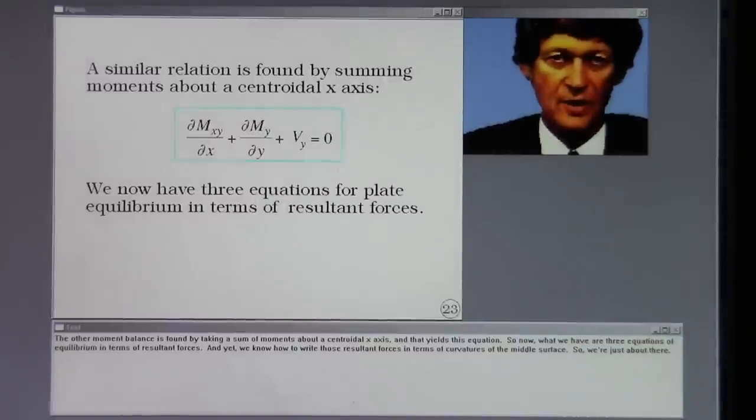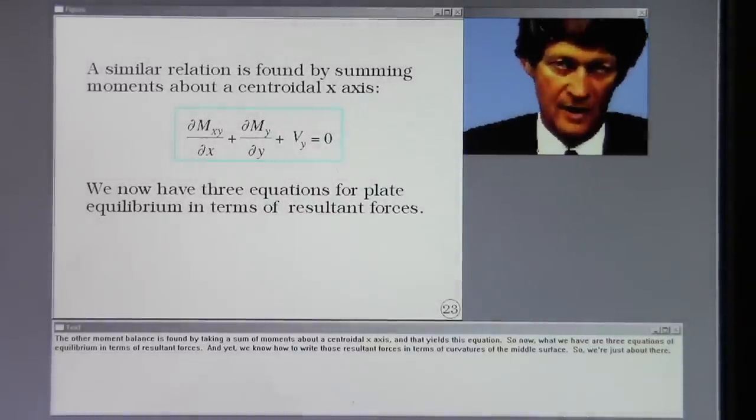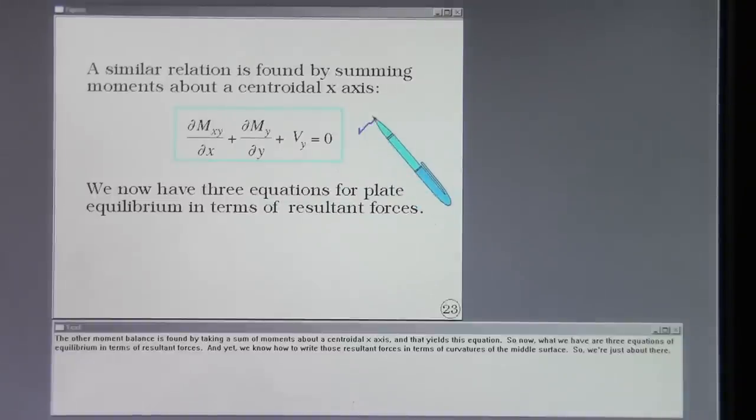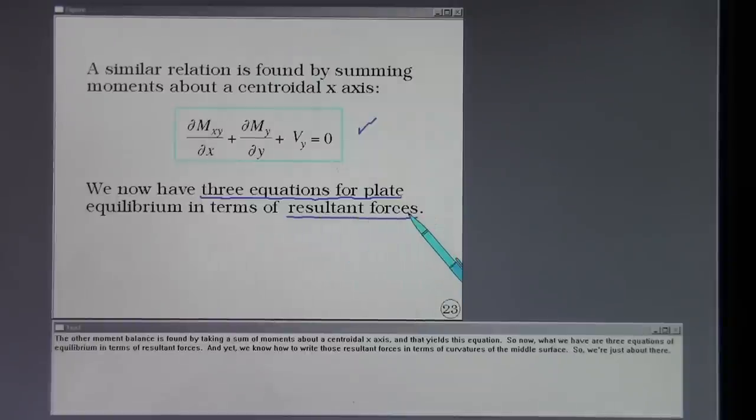The other moment balance is found by taking a sum of moments about a centroidal x-axis. And that yields this equation. So now what we have are three equations of equilibrium in terms of resultant forces. And yet we know how to write those resultant forces in terms of curvatures of the middle surface. So we're just about there.